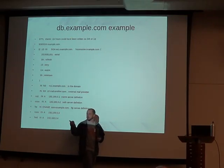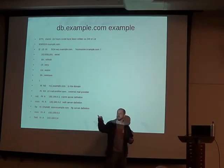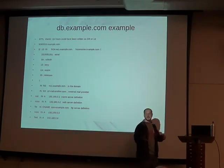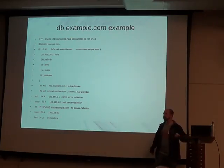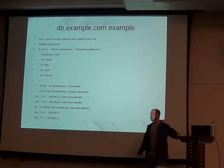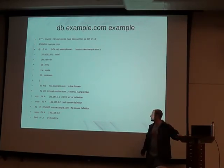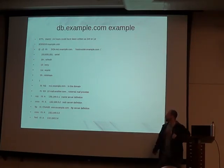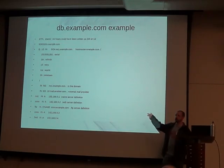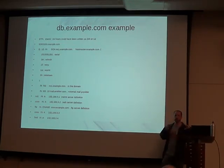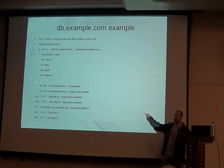With Bind9 you have to use the CNAME. I use Unbound — it's easier, I don't have to worry about it. You can't do the same IP to multiple hostnames; you have to use CNAME in that case with Bind9. I don't know if it's different in Bind10 — I've never used it.